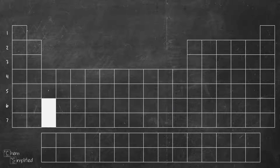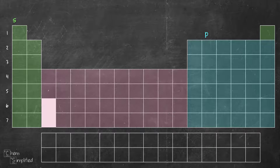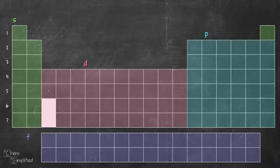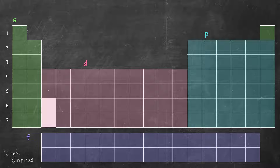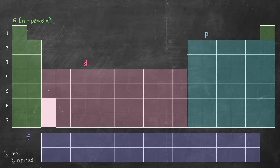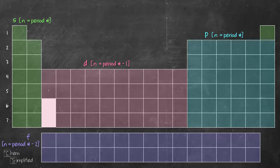Before we start, let's identify the different blocks in the periodic table. This is the S block, and this is the P block. Transition metals are the D block, and the inner transition metals are the F block. To write the electron configuration, you'll need to know the relationship between the energy level and the period number. Periods are the rows indicated here, 1 to 7.